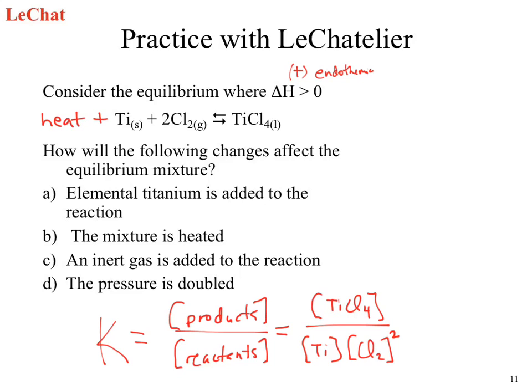What did we say at the very beginning when we first looked at equilibrium? What phases can show up? Gases and aqueous — it must be a solution. Liquid is a different phase. Which means our equilibrium expression is going to be equal to one over the concentration of the chlorine squared. Why can we ignore our titanium chloride and our titanium? What's the concentration of a liquid? It's pure.